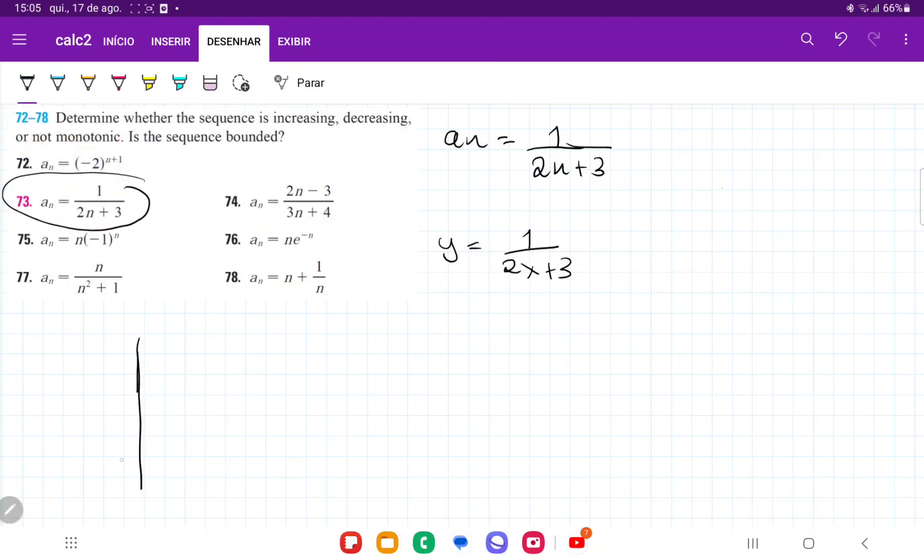So if I were to draw a random function that goes like this, this is f of x, our a of n is going to do the same thing, but it's only going to be defined here at the natural numbers. So we can see that behavior is the same.